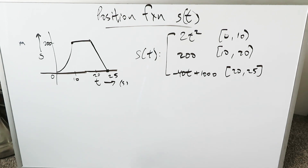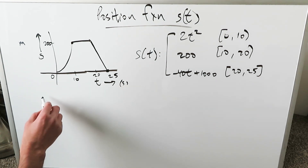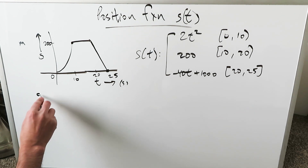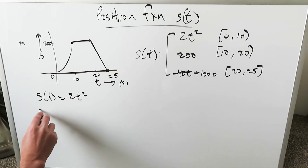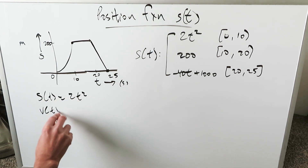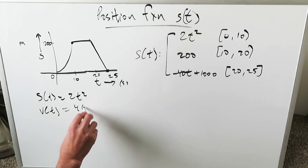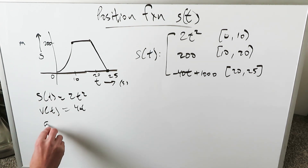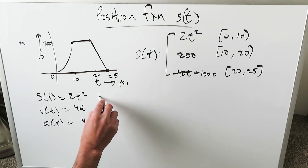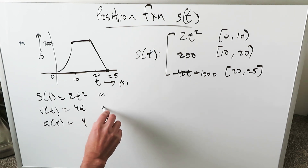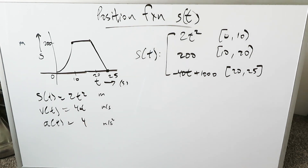If you are given this on an exam, how do you start? You look at the very first part. You have 2t squared — your position function is equal to 2t squared. You do its derivative and you get 4t. You do the derivative of that again and you get 4. The position is in meters, velocity is in meters per second, and acceleration is in meters per second squared.